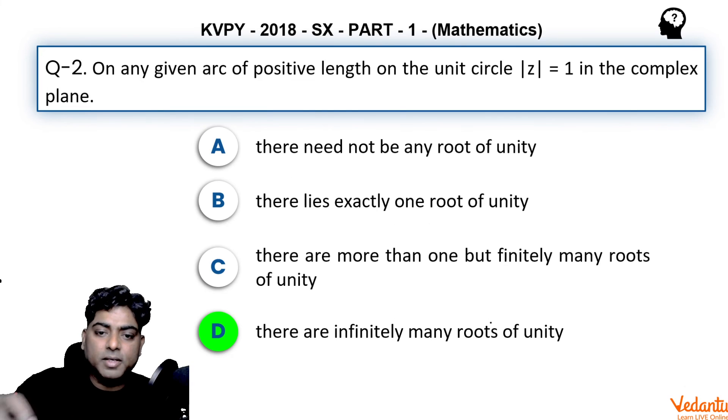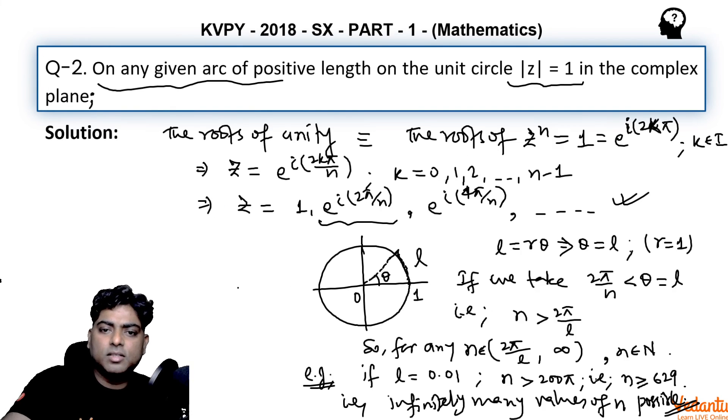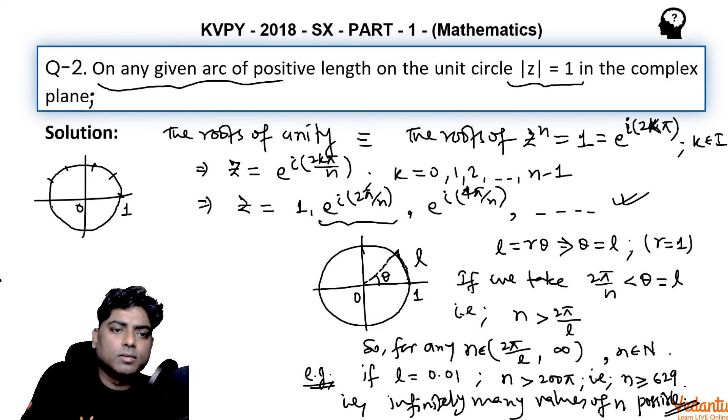So the answer to this question must be there must be infinitely many roots of unity. See, the roots of unity are basically symmetrically distributed on this circle. So if you take any arc, we can increase n correspondingly.